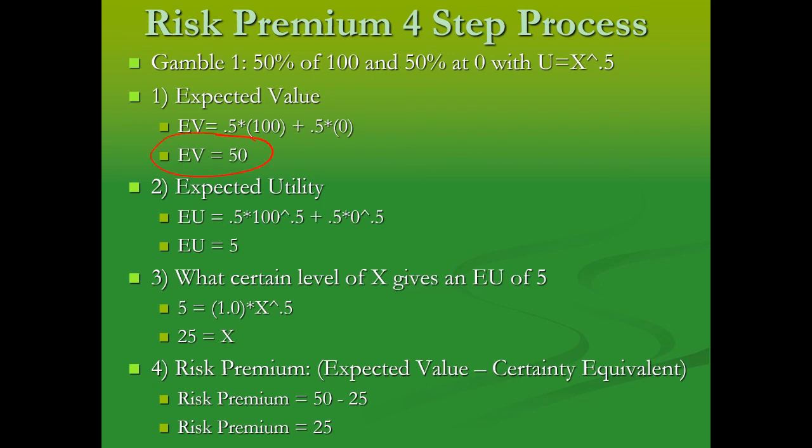The expected value was 50 and the certainty equivalent was 25, so the risk premium is 50 minus 25, which equals 25.